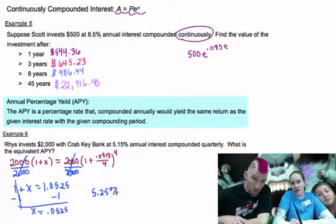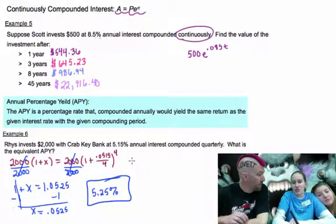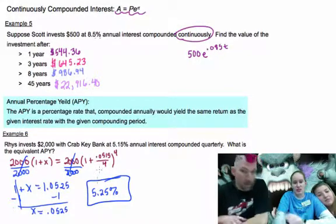So yeah, if we wanted to do 5.15% annual interest but we're compounding it quarterly, that's equivalent to just having 5.25% right, just one time a year. Right, you'll get the same amount of money after the same amount of years. Exactly.